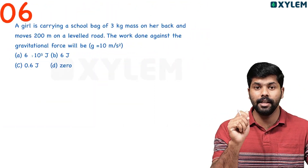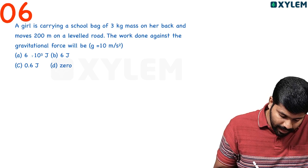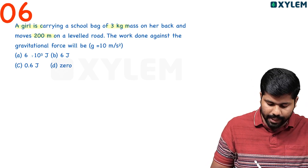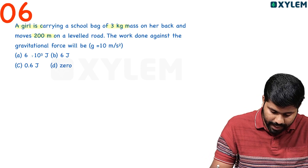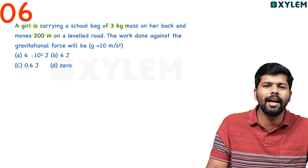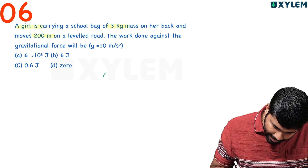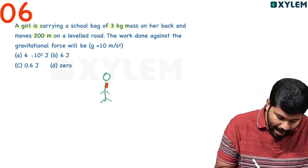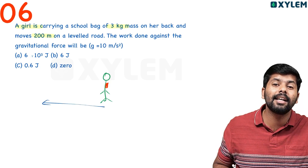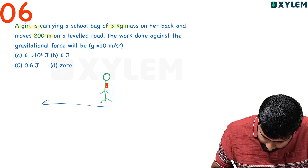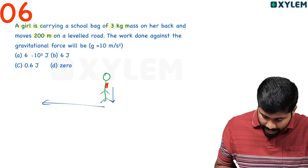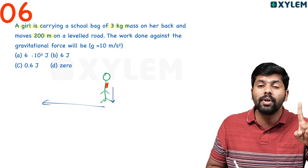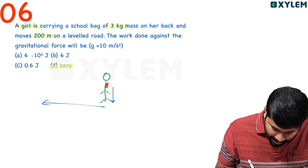Next question: A girl is carrying a school bag of 3 kilogram mass on her back and moves 200 meters on a level road. Work done against the gravitational force will be? She is carrying her bag and walking along a straight line. The direction of displacement is horizontal, and gravitational force acts downward. There is no displacement in the direction of force.